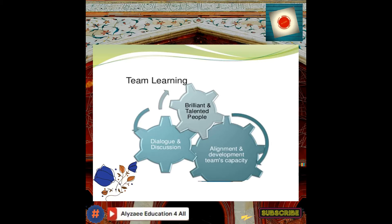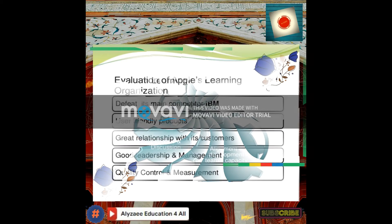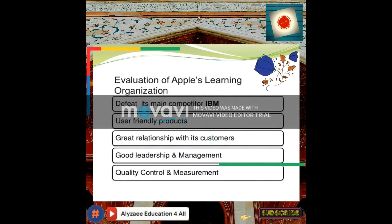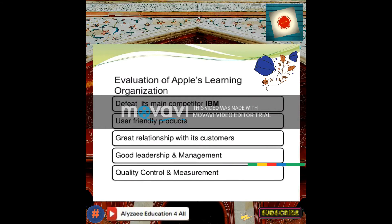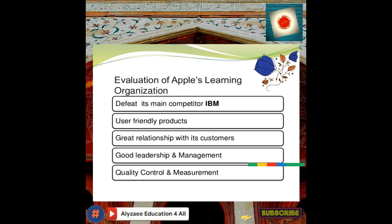When evaluating Apple as a learning organization, we look at how it defeats its main competitors. One can say IBM is the main competitor, or HP or Dell. Apple offers a user-friendly product, great relationship with its customers, and good relationship management.